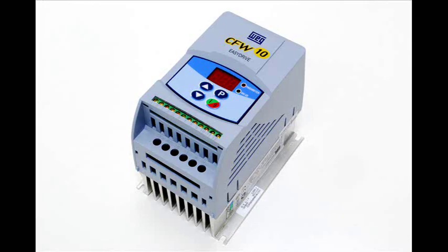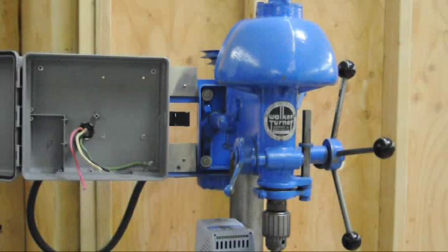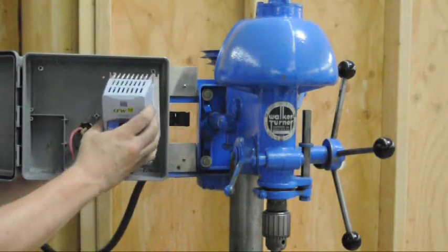Using the CFW 10 easy drive, you can power your three-phase motorized equipment from common household single-phase power. In addition to phase conversion, the CFW 10 easy drive also gives you the ability to precisely control the speed of your motor. For machines like our drill press here, that means no more annoying belt pulley changes when we want to change the speed of our bit.